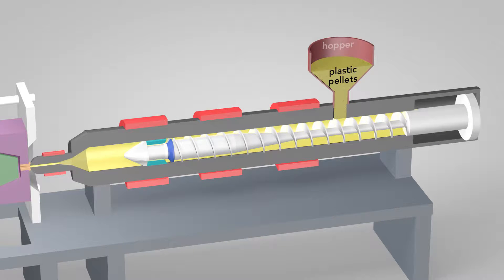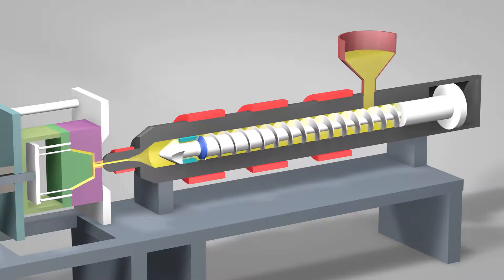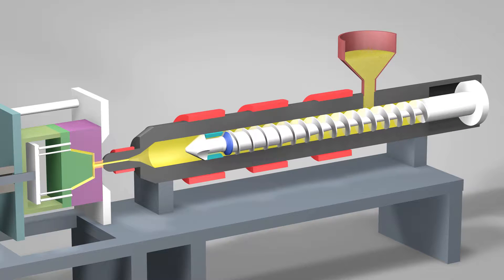Plastic pellets in the hopper feed into the barrel of the injection unit. Inside the barrel, a screw transports the pellets forward. Heater bands wrapped around the barrel warm up the plastic pellets. As the pellets are moved forward by the screw, they gradually melt and are entirely molten by the time they reach the front of the barrel.